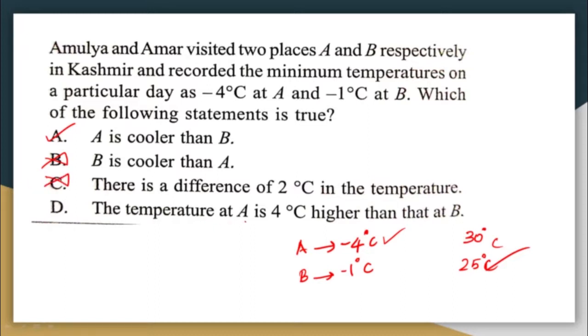The option stating the temperature at A is four degrees higher than at B is also clearly wrong. The correct answer here is option A. As soon as you read option A and understand it is correct, just mark it and move on.